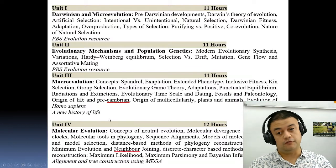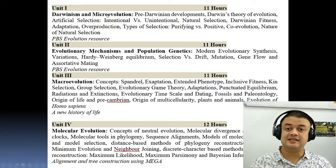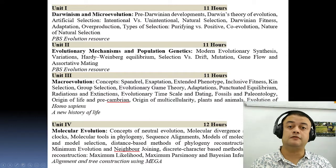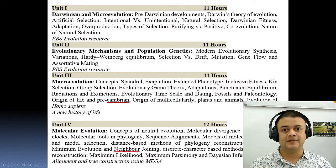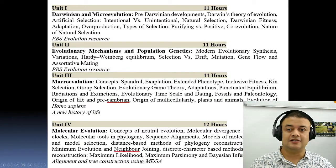There are four units. The first unit covers microevolution and the intricacies of Darwinism, especially the different modes of selection.